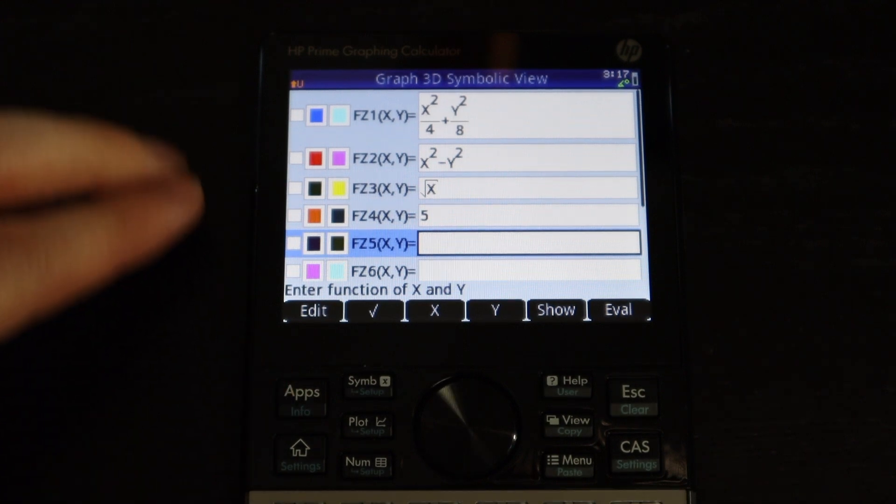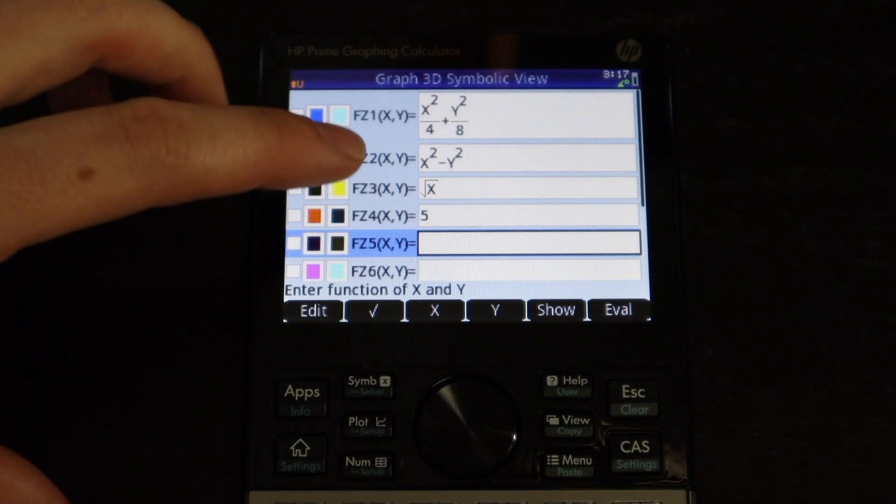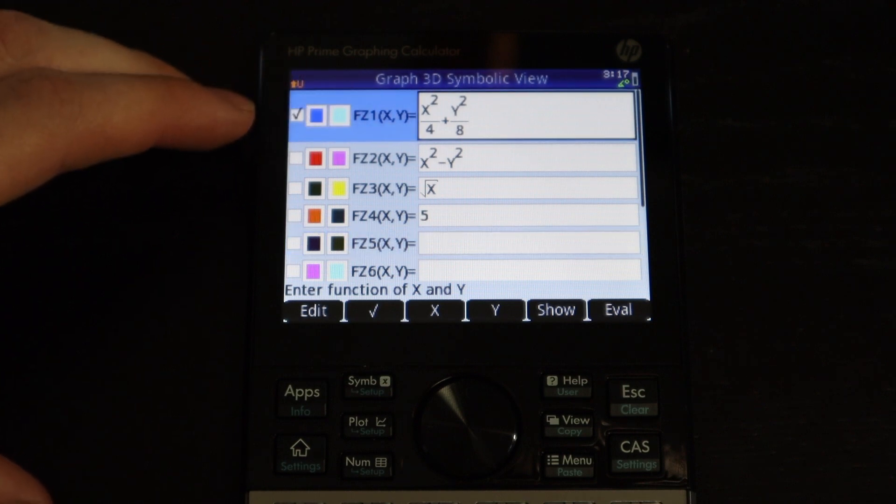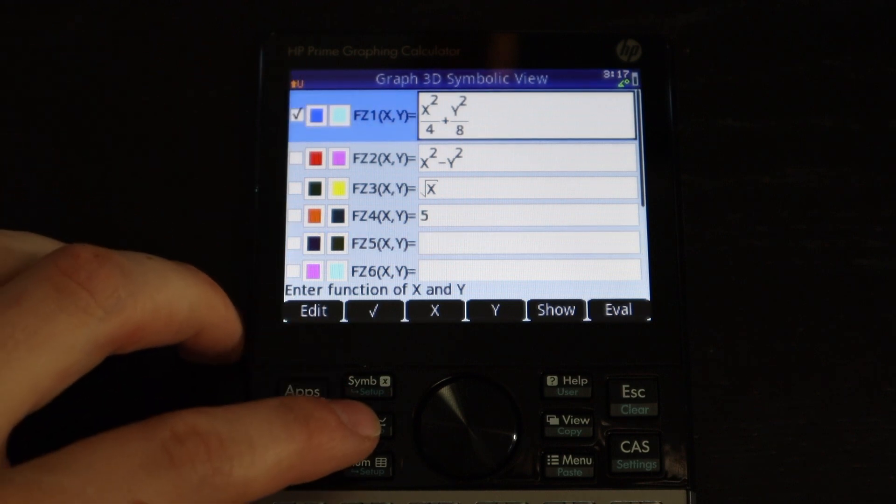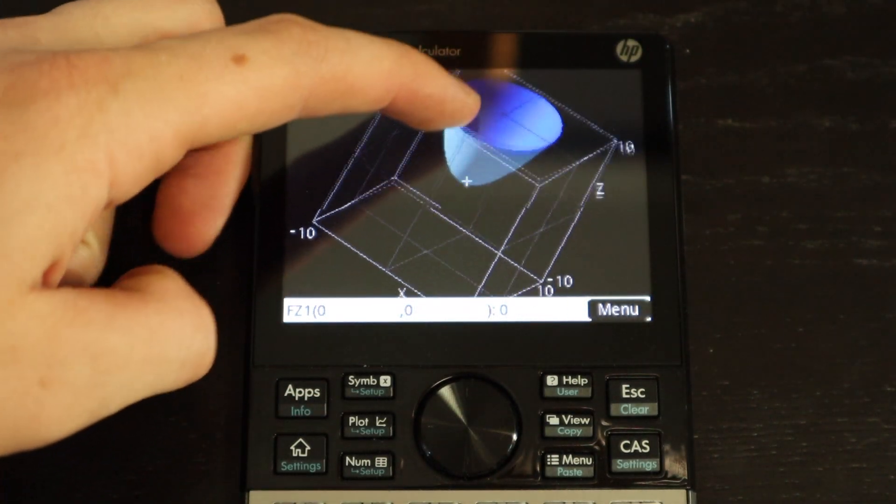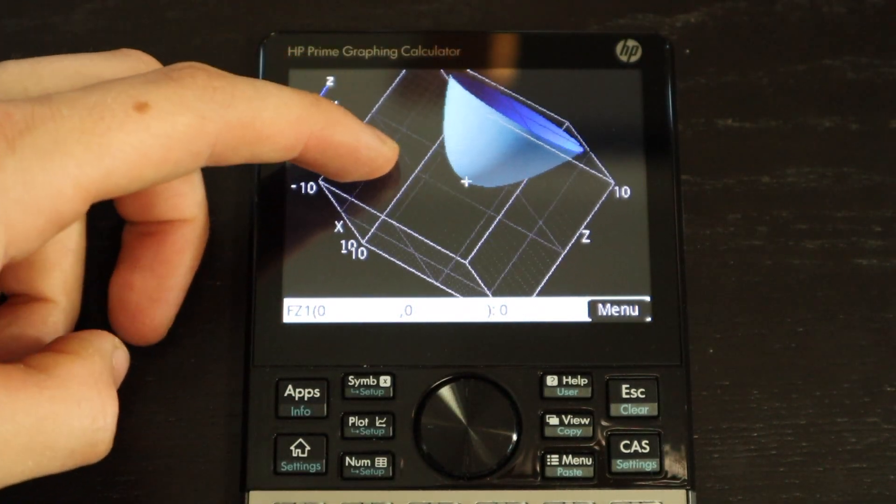So okay, when you finally want to graph a function, I have four of them queued up here. But I'm just going to tap this to turn that function on and then it'll only display that one. And here is what the actual graph looks like.